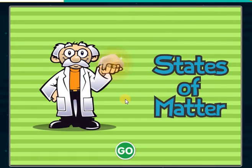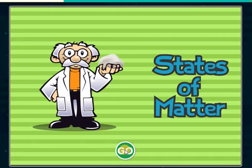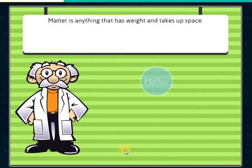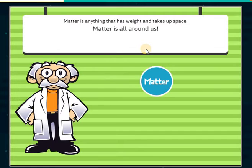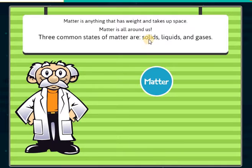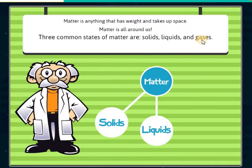States of Matter. Matter is anything that has weight and takes up space. Matter is all around us. Three common states of matter are solids, liquids, and gases.